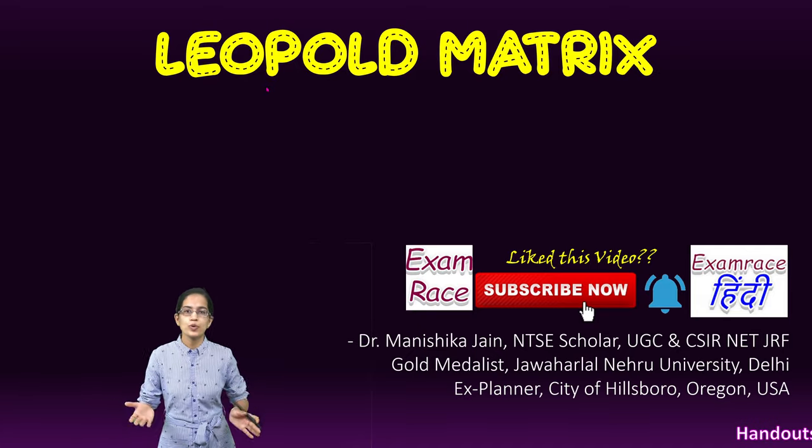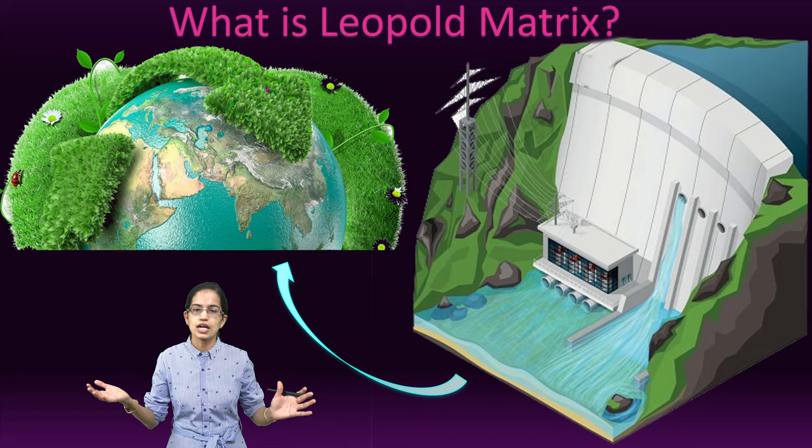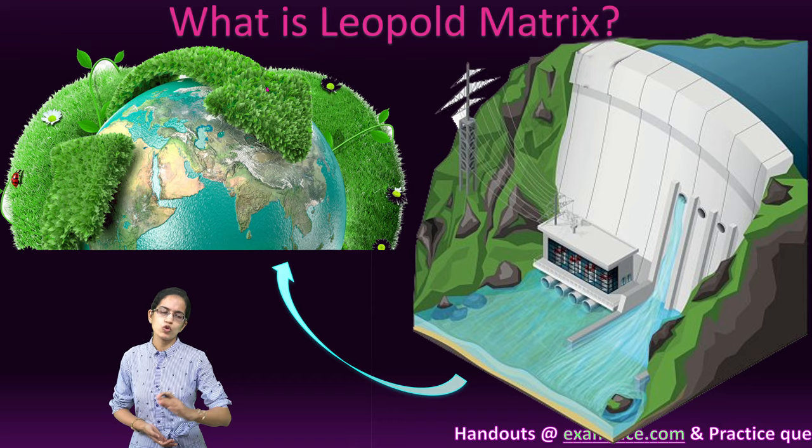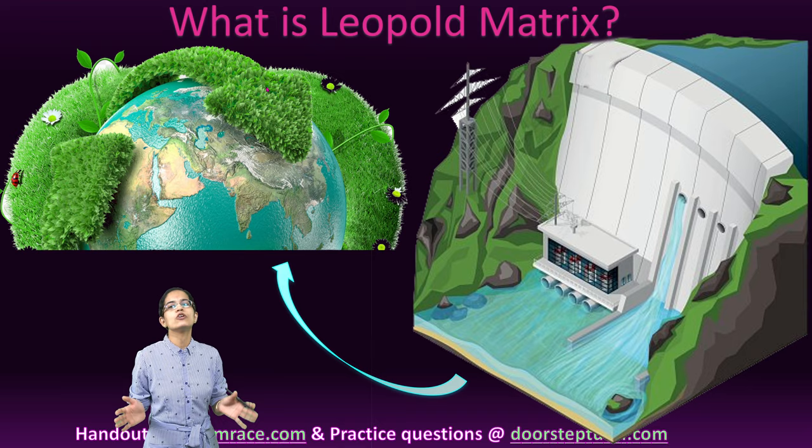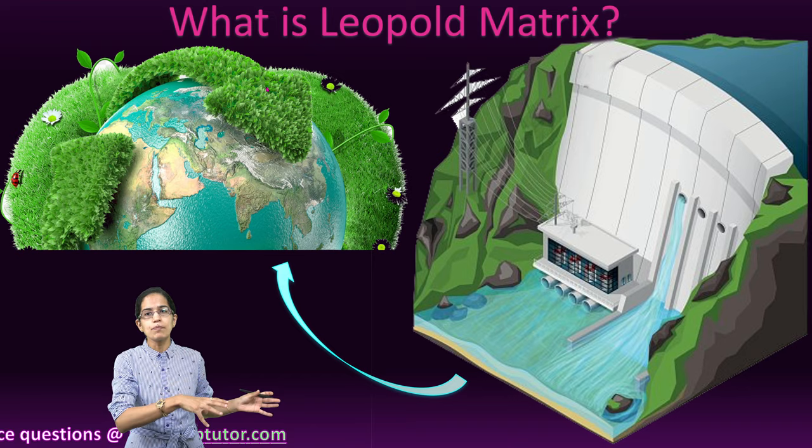What is a Leopold Matrix? When we focus on any project that has to be started for the environment, what do we think about first? If you are establishing a dam, what would be its impact on nature? That's what a Leopold Matrix is — nothing more, nothing less. It's a matrix that helps us in predicting the impact of any feature which has been brought onto the environment.